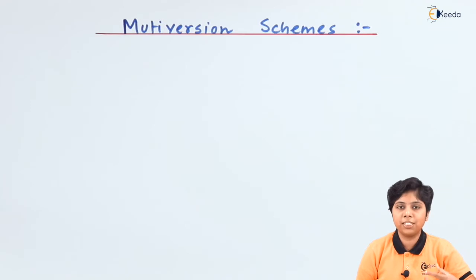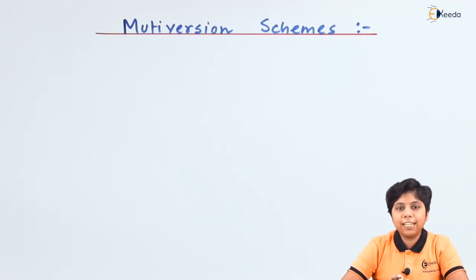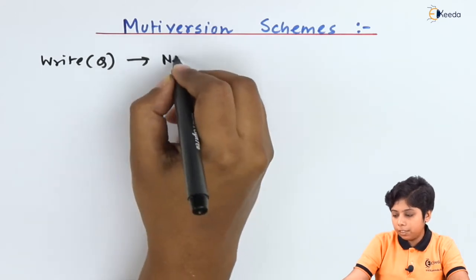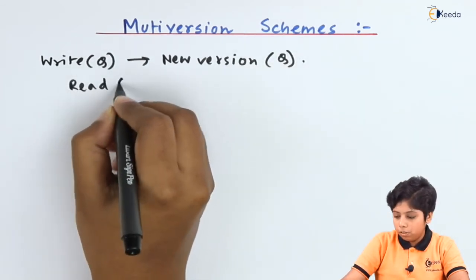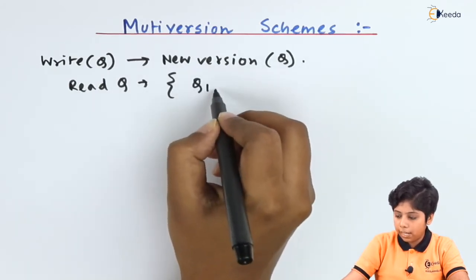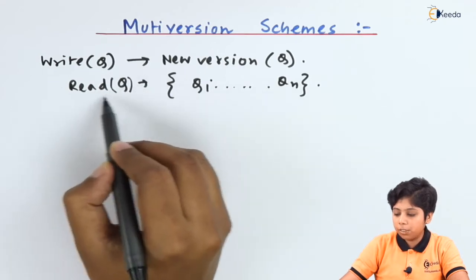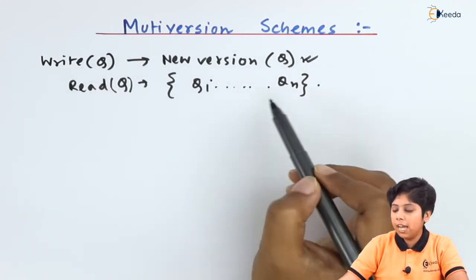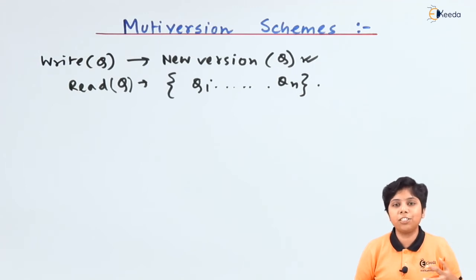We will perform this multi-version concurrency control such that there will be no obsolete data that we read. In this multi-version scheme, each write operation gives a new version of the data item Q. The write operation provides a new version on Q, and the read operation has to choose from the set Q_i to Q_n. So the read operation on data item Q can choose from versions Q_i, Q_j, Q_n. If there is an older version, we can simply delete that version rather than waiting.